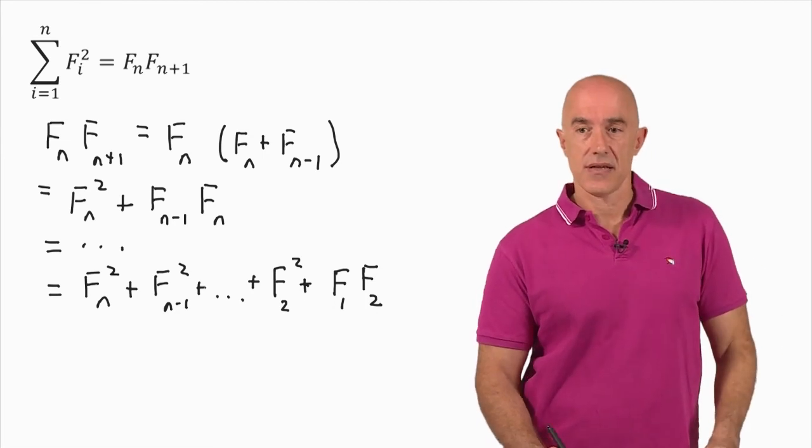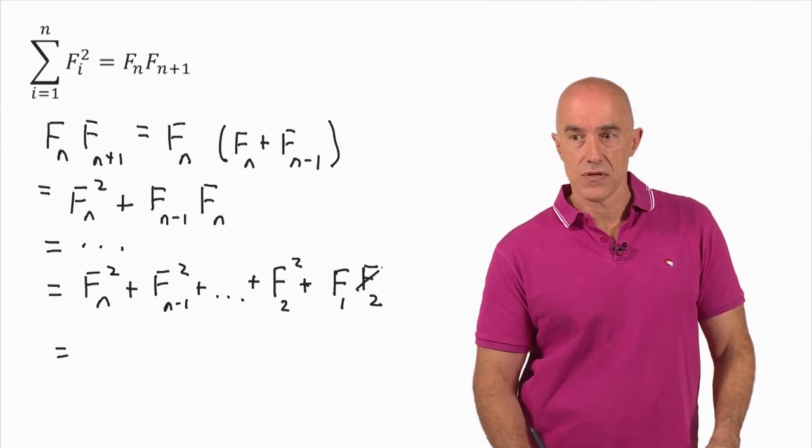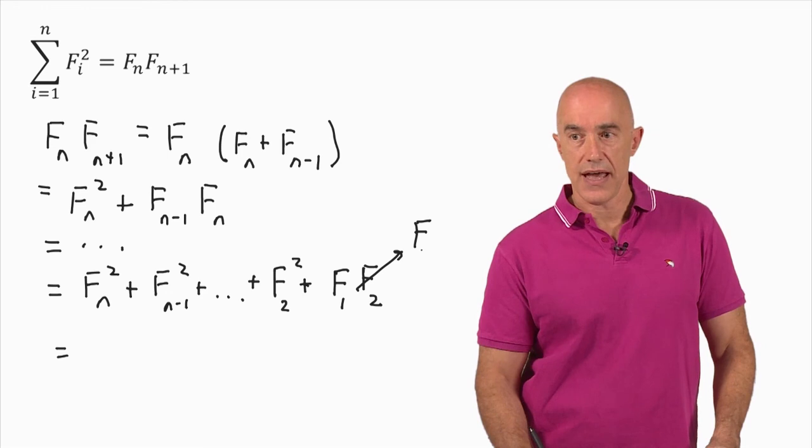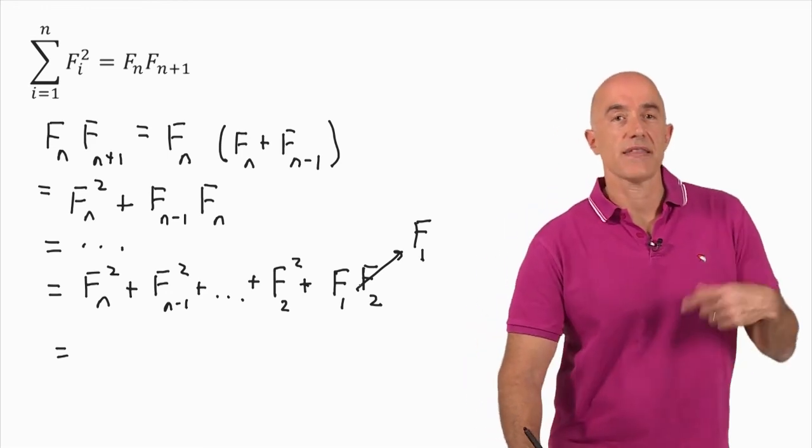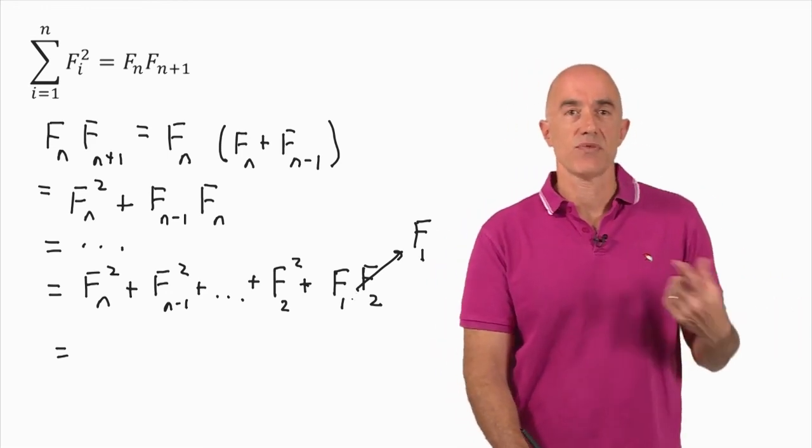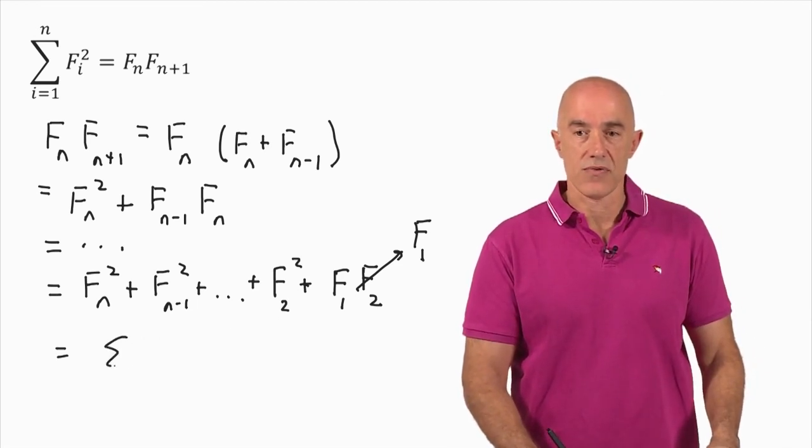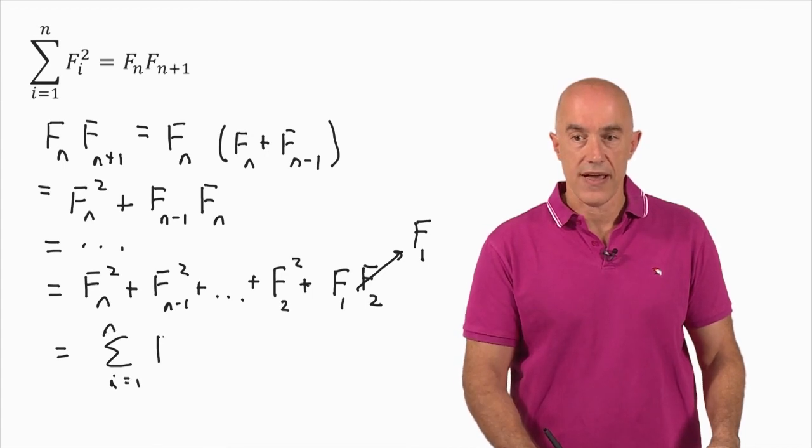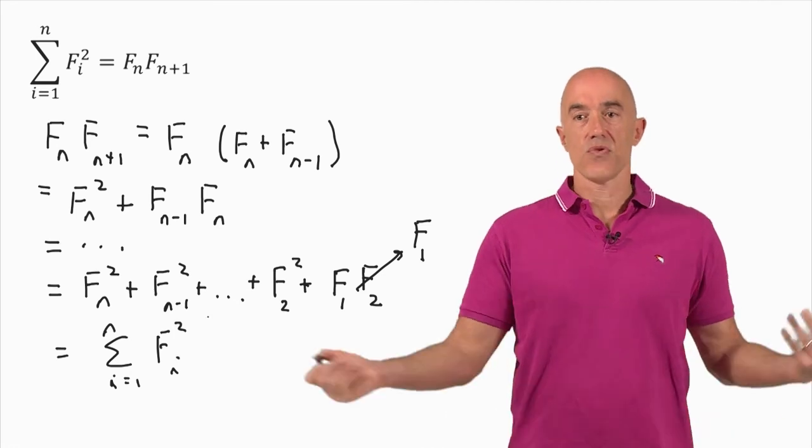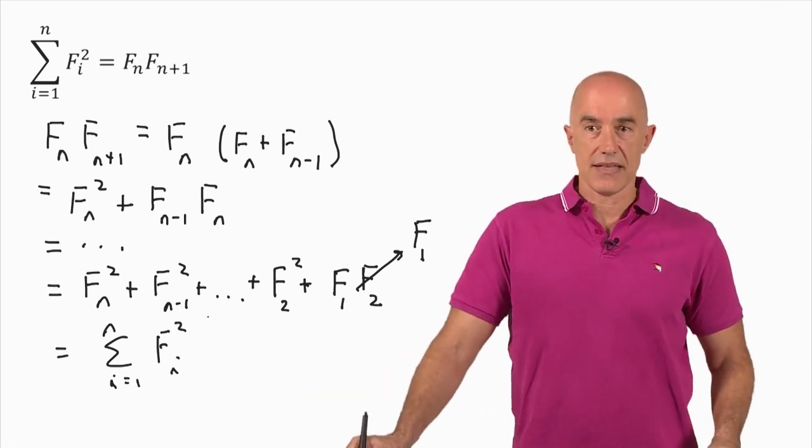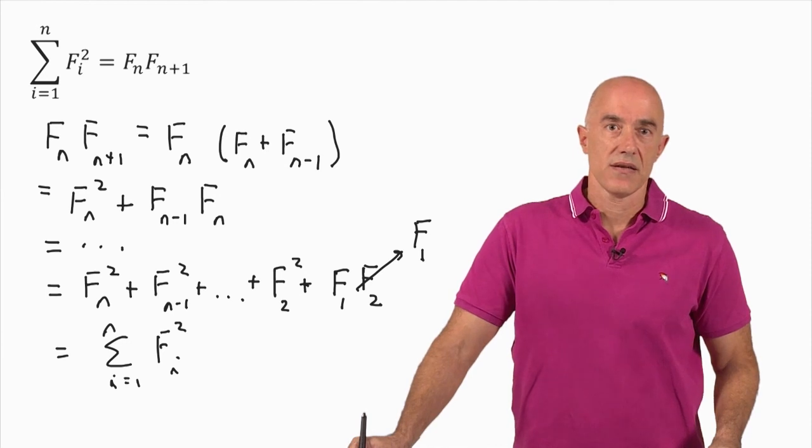So this isn't exactly the sum except for the fact that F sub 2 is equal to F sub 1. So the fact that F sub 1 equals 1 and F sub 2 equals 1 rescues us. So we end up with the summation from i equals 1 to n of F sub i squared. So we prove the identity.